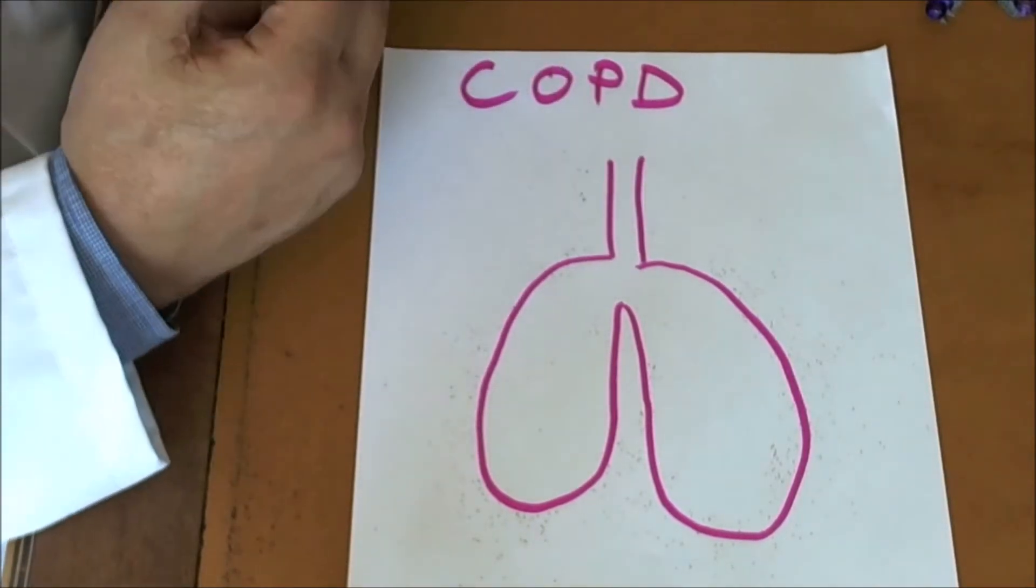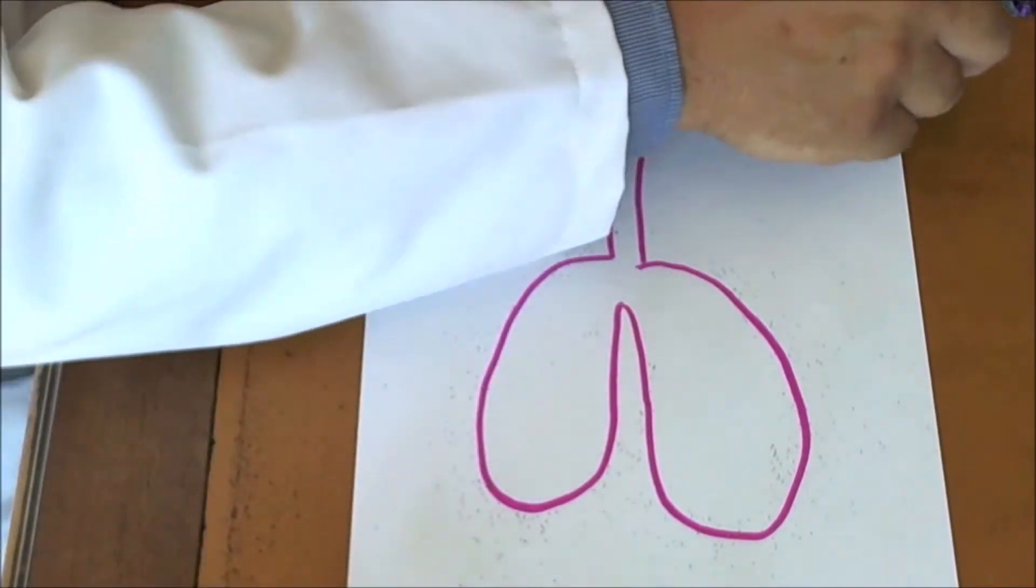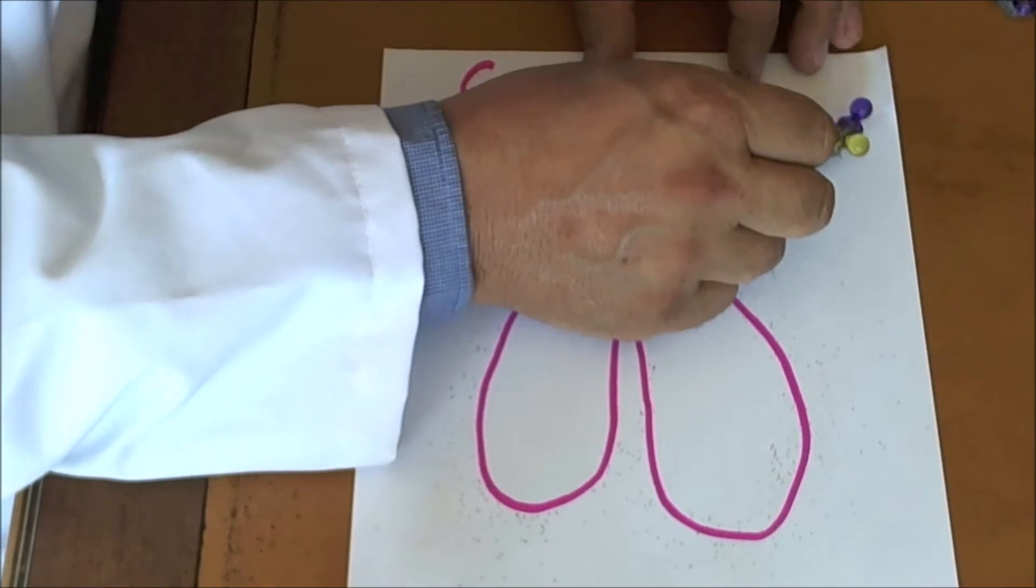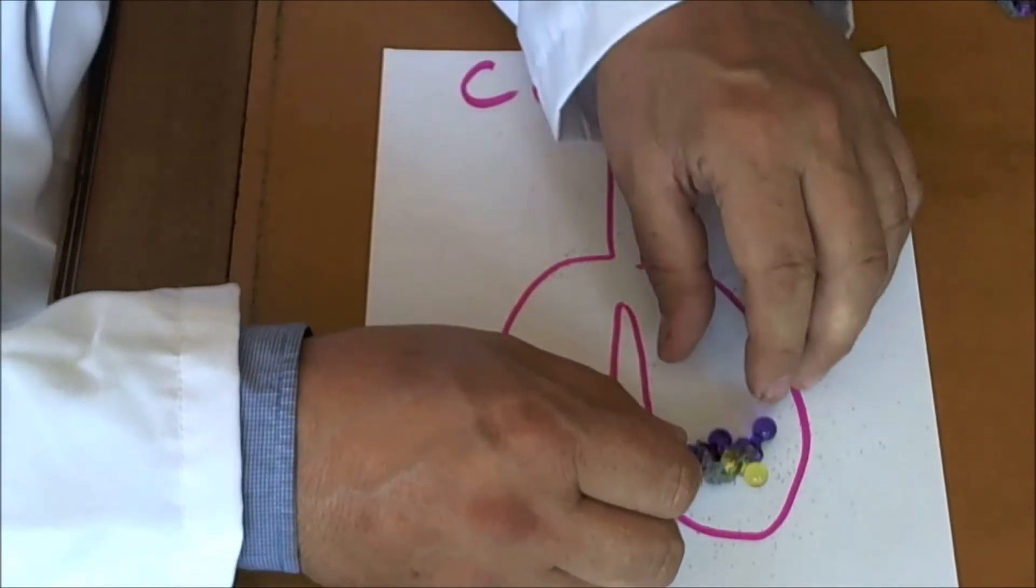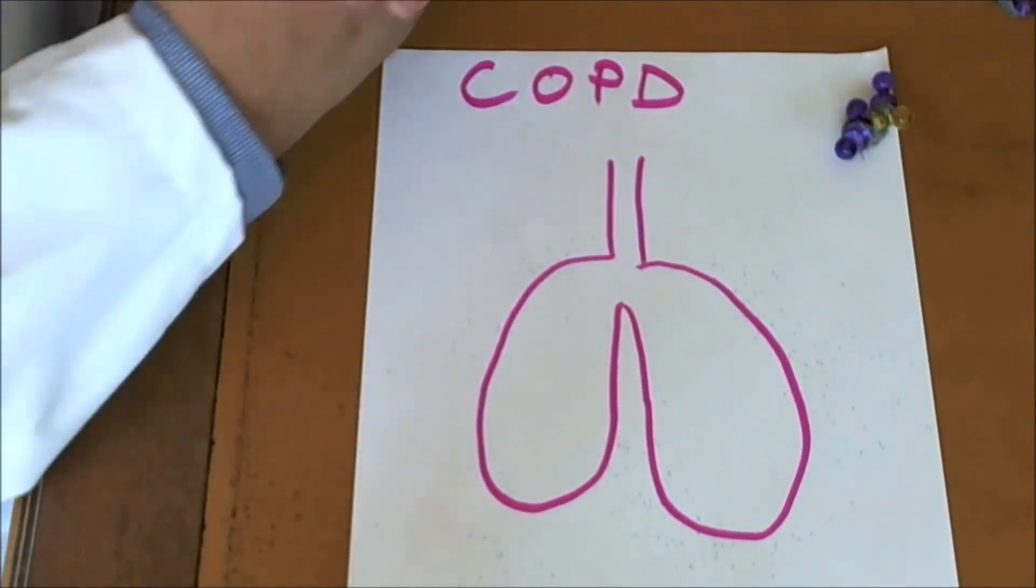So to go over that again: the bacteria, yeast, and molds in your lungs - you breathe in through steam these plant extracts and homeopathic remedy. They go into your lungs, then you cough it out again, and it's killed it on contact.